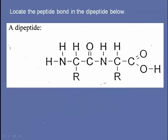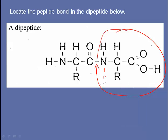Can you locate the peptide bond in this dipeptide? A dipeptide forms when one molecule of water is removed from two amino acids. You should have spotted it here — what's missing is the original hydrogen from one amino acid and the OH group from the end of the other amino acid.